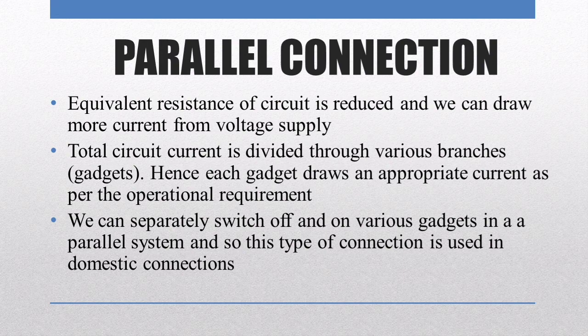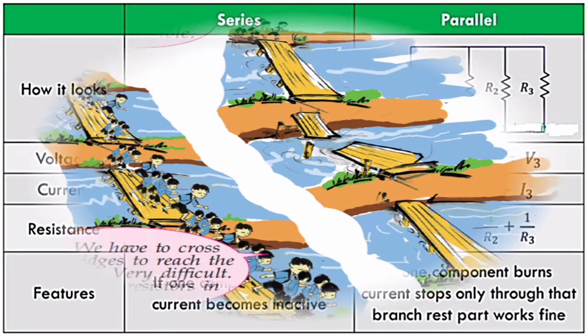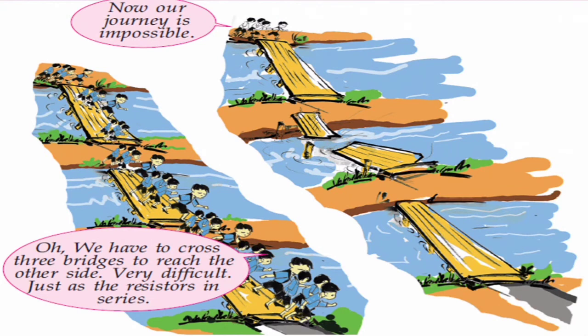Comparing series and parallel circuits: In a series circuit, voltage is the sum of individual voltages across each component, whereas in a parallel combination voltage is the same across all components. In a series combination, current is the same throughout the circuit, but in a parallel combination each branch carries its own current. The equivalent resistance is R1 + R2 + R3 in series, whereas in parallel you take the reciprocal sum to find the equivalent resistance.